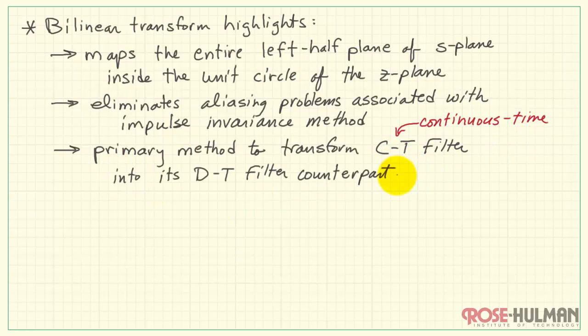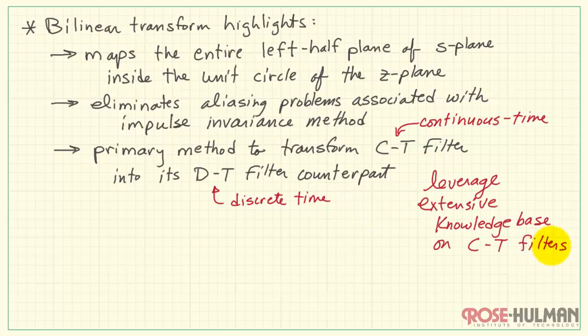The bilinear transform is the primary method to transform a continuous time filter into its discrete time filter counterpart. The advantage for using a continuous time filter prototype is that we can leverage the extensive knowledge base that we have on continuous time filters.